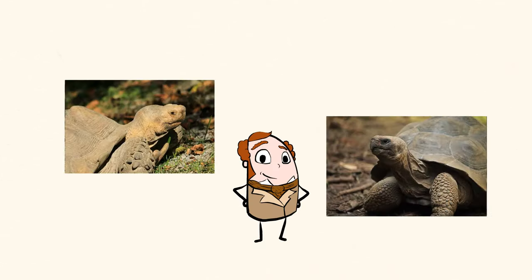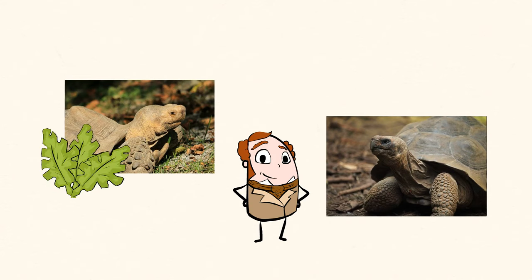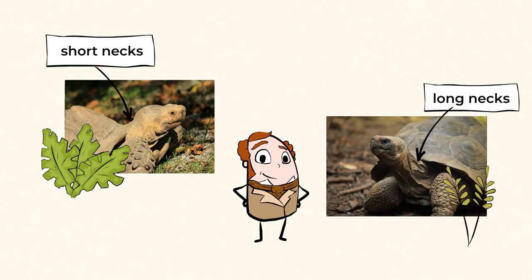Darwin also observed the tortoises around the islands. In the humid areas where there were a lot of plants, the turtles had short necks and dome-shaped shells. While in the drier areas, they had longer necks and saddle-shaped shells. Now, where do those differences come from?